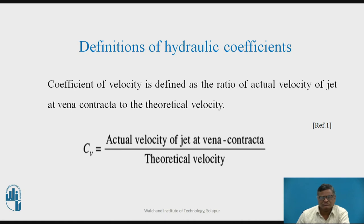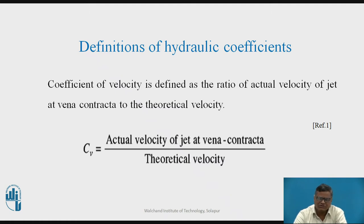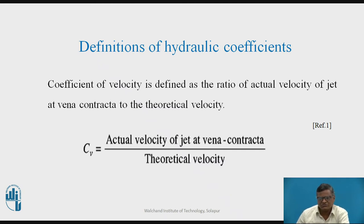Now let us move to the coefficients. The first coefficient is the coefficient of velocity. The coefficient of velocity is nothing but the ratio of actual velocity of the jet at vena contracta to the theoretical velocity. Actual velocity is with reference to the vena contracta zone.